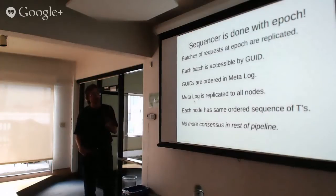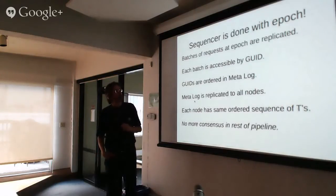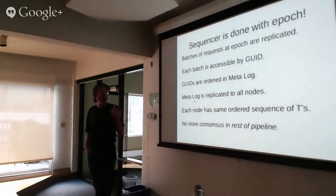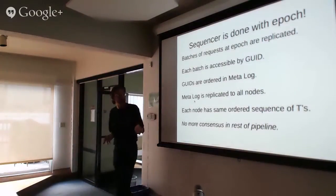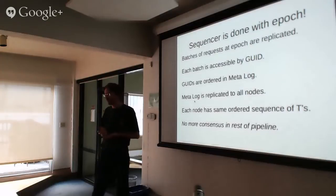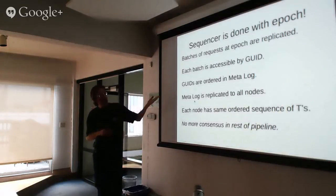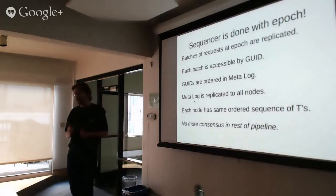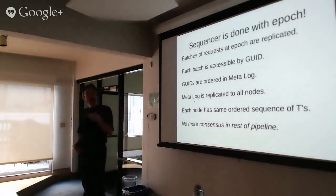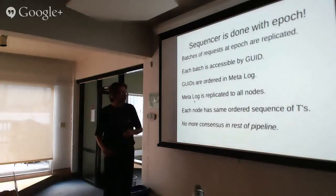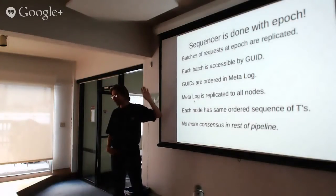At that point, the sequencer has completed the work for that first epoch — the first 10 milliseconds. It's taken a batch of requests from each sequencer and replicated it across the system. Each batch is now accessible by its GUID from anywhere in the system. The GUIDs have been entered into the MetaLog establishing an order everybody agrees on, and that ordering has been replicated to all nodes. Using that ordering, everybody can see the transactions in exactly the same sequence. After this point, that's all we ever need to do consensus on — we haven't executed any transactions yet, but we've completely finished with any need for consensus.